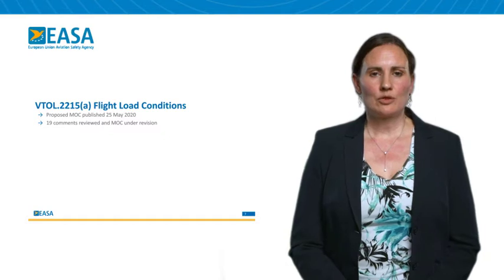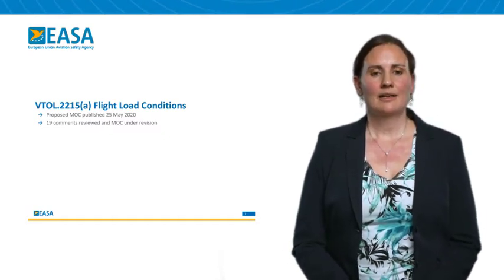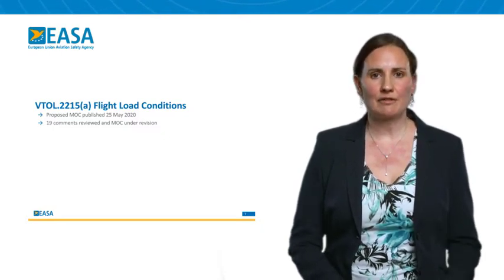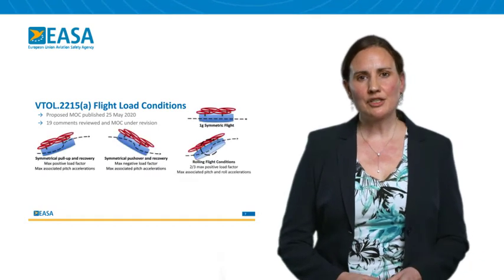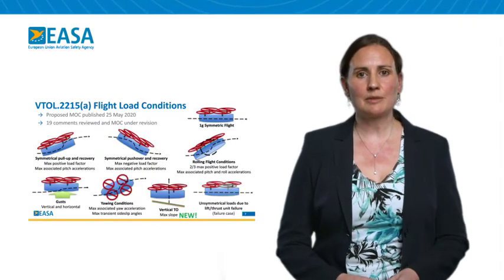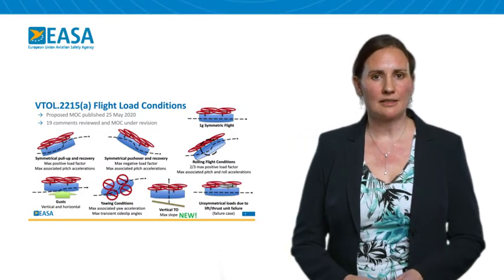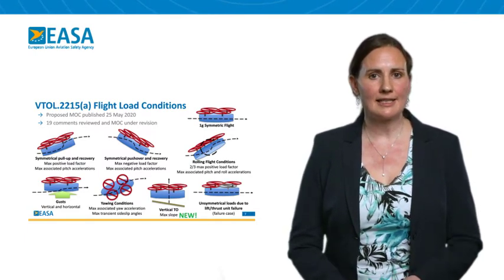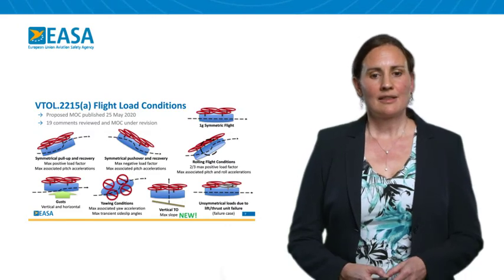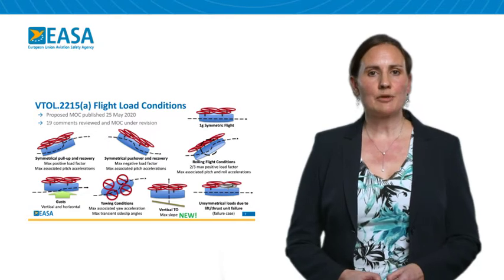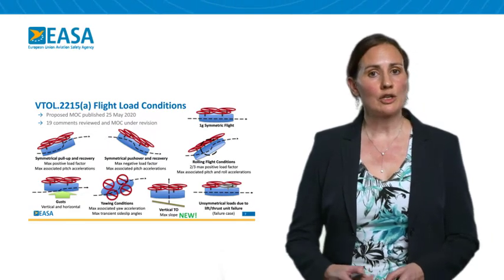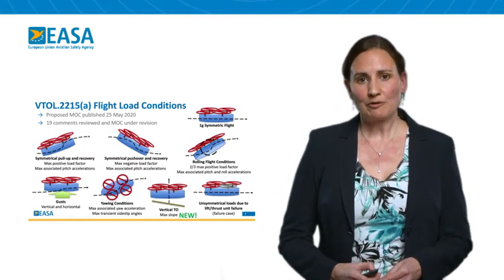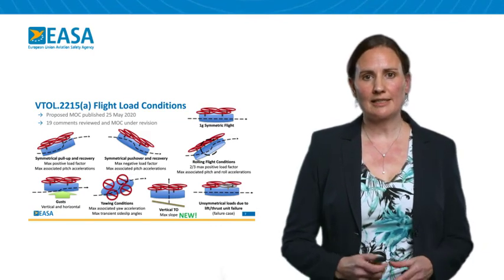The flight load condition MOC was also published in Phase 1 in May of this year. 19 comments have been reviewed and the MOC will be under review to simplify it and give further explanation. The intention of the MOC is to define a minimum set of flight conditions that must be considered in order to define design loads which will conservatively envelope those that may be seen in operations. These flight loads may be simulated, or defined by combining a conservative set of parameters, or a combination of these. The flight control system limitations, without failures, may also be taken into account when defining these manoeuvres.